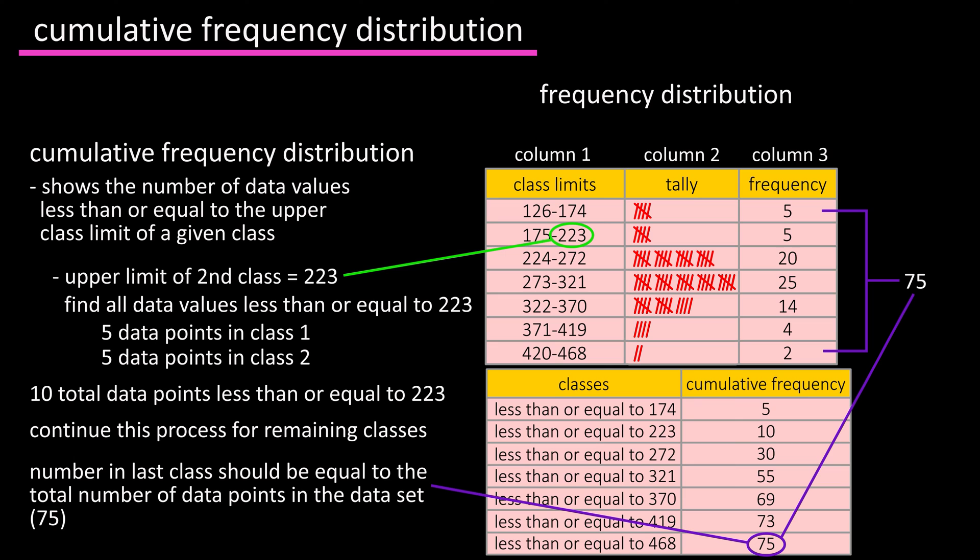Basically, what we're doing is adding up all of the data points that lie under a specific value. In this case, an upper class limit. This allows you to organize the data a bit more in depth and allows you to look at the data in a different way to get another perspective on the data.